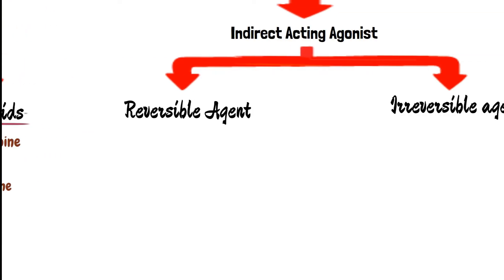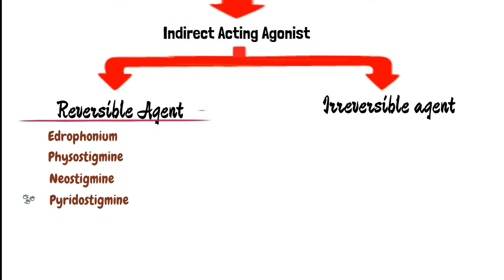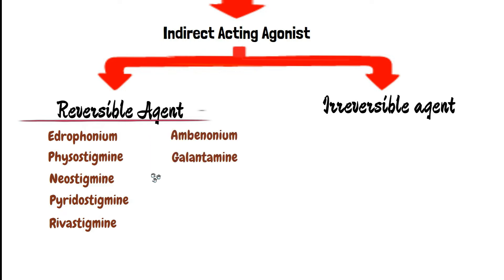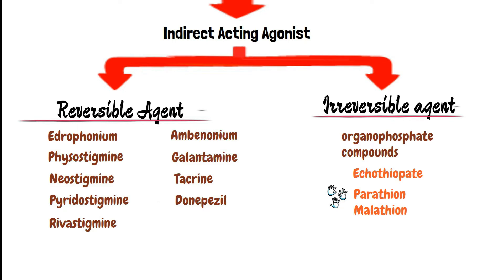Anticholinesterase reversible agents include edrophonium, physostigmine, neostigmine, pyridostigmine, rivastigmine, ambenonium, galantamine, tacrine, and donepezil. While the irreversible anticholinesterases include organophosphate compounds like acetylpate, and insecticides such as parathion and malathion, and nerve gases like soman and sarin.